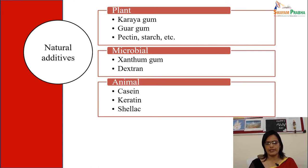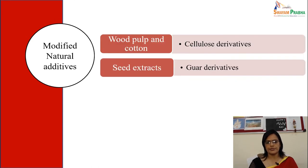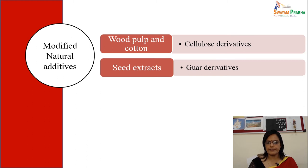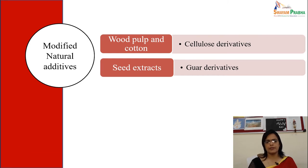Remember natural additives. Modified natural additives include cellulose derivatives, guar derivatives, and seaweed extracts. Examples include guar derivatives and cellulose derivatives from wood pulp and cotton.